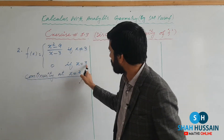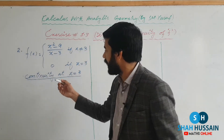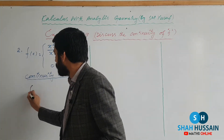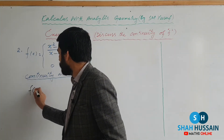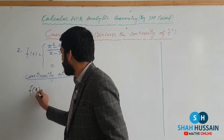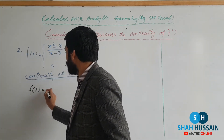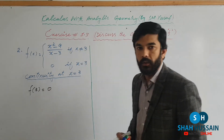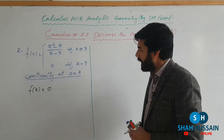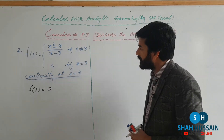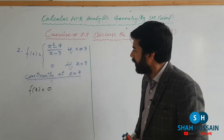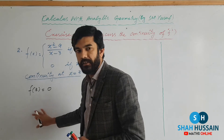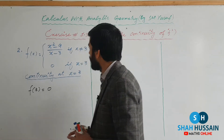First of all, we have to find the function value (constant) when x = 3. Fitting x = 3 gives f(3) = 0. So function of constant f(3) is equal to 0.